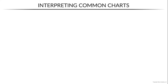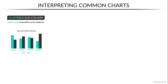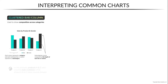Now let's move on to some slightly less common but still extremely useful visuals. We'll start with the clustered bar or column chart, which is used to show composition across categories. Here we have a clustered column showing sales by both product and customer gender. Each cluster represents a category — in this case product — and each individual column within that cluster represents a subcategory, in this case gender. So interpreting this example, we see that products A and C skew towards male customers, while products B and D tend to skew towards females.